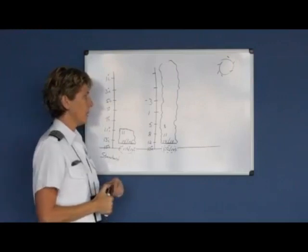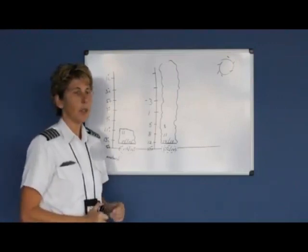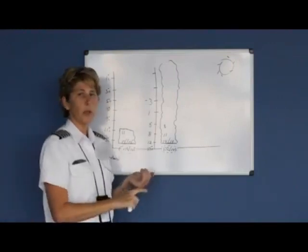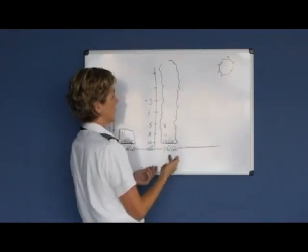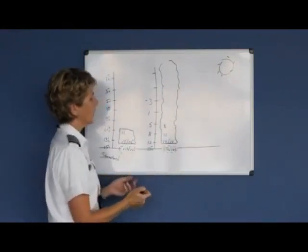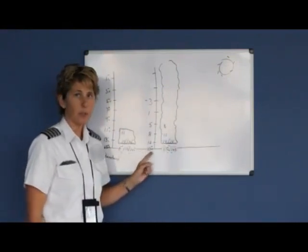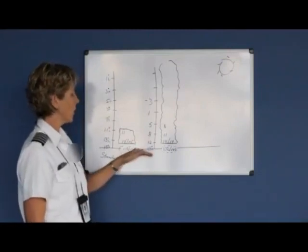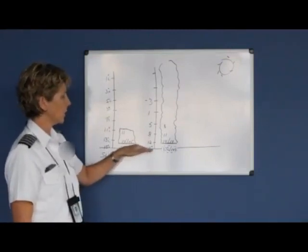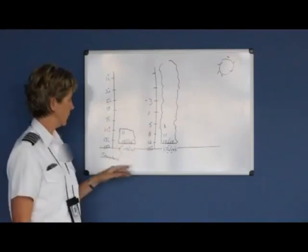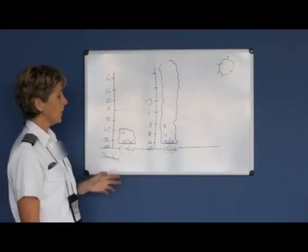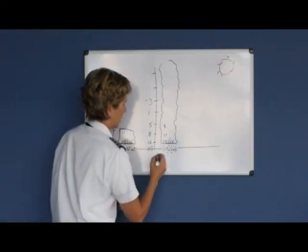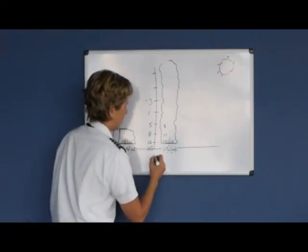So what exactly made this air so unstable? We had to have moisture, we had to have a lifting force — which I used the sunshine in my example — and we had unstable temperatures. The unstable temperatures are where the temperature lapse rate dropped more than 2 degrees per thousand feet.